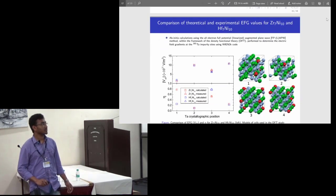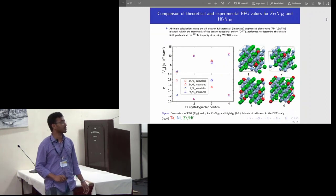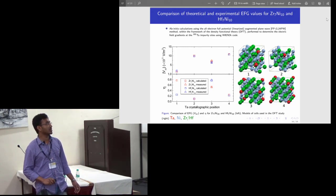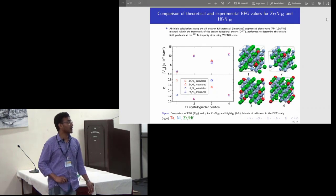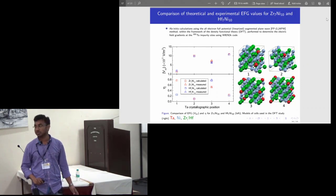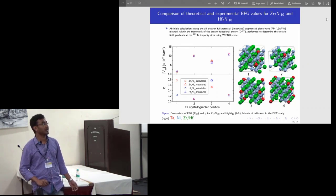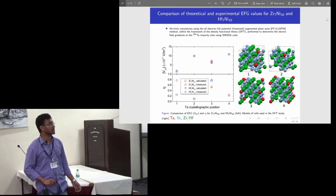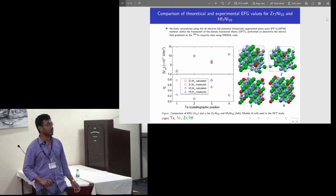We have carried out the electric field gradient theoretical calculation at a tantalum impurity position using Wien2k code, which is based on the all-electron full-potential linearized augmented plane wave method. In both Zr7Ni10 and Hf7Ni10 there are 4 non-equivalent crystallographic positions of zirconium and hafnium. I have plotted the measured value and the calculated value for all these Zr7Ni10 and Hf7Ni10. For only zirconium 3 or hafnium 3 positions we found that the experimental value matches well with the theoretical values.